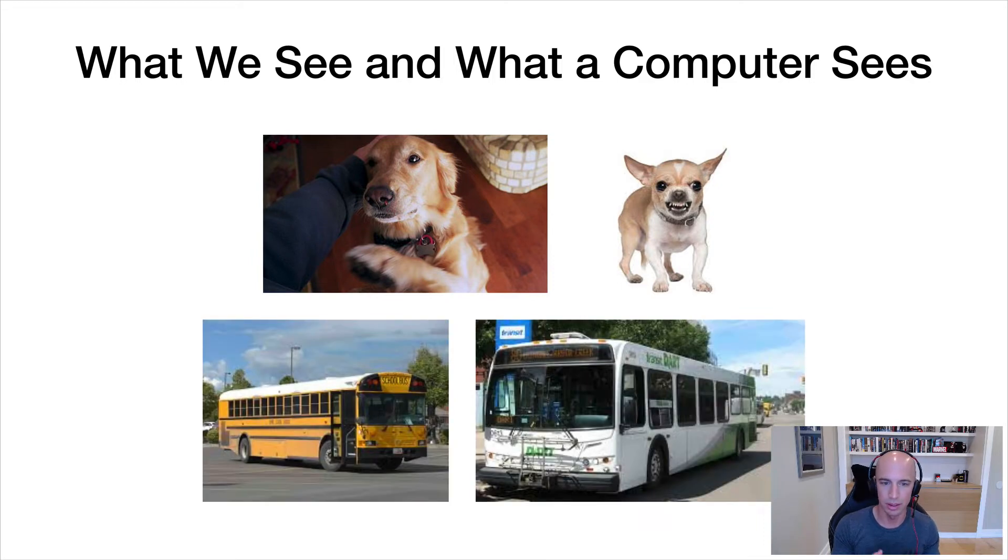Another good example here is on the bottom are these examples of buses. A young child can understand both of these images are buses, but a young child can also understand that the image on the left, that's a school bus. And the image on the right, that's a different type of bus, a transport bus or a commuter bus.